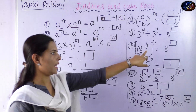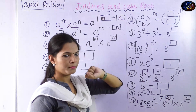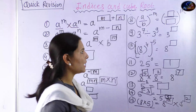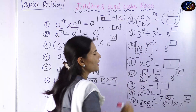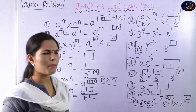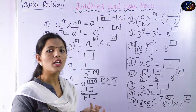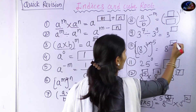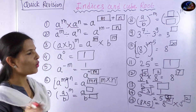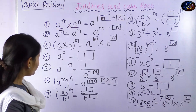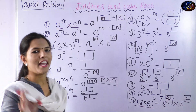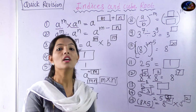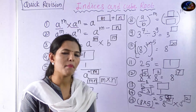Here is an example for this rule: 8 raised to 4, and then the whole bracket raised to 5. So what is your answer? Apply the rule and multiply the exponents: the answer is 8 raised to 4 into 5, which equals 8 raised to 20.